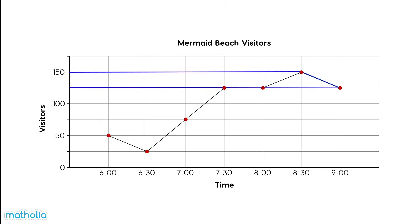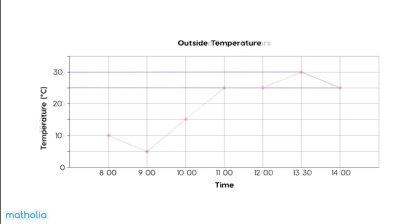I hope these questions have helped you to learn to interpret line graphs. At home, measure the temperature outside every hour for 6 hours. Show how the temperature changes by drawing a line graph. Tell what you can interpret to a friend. See you next time.